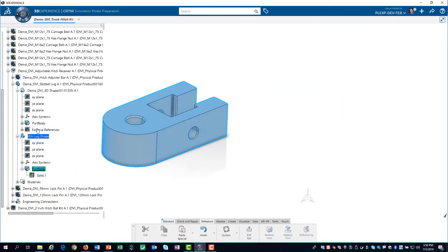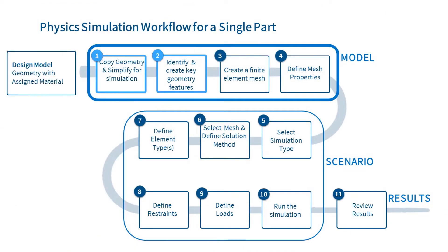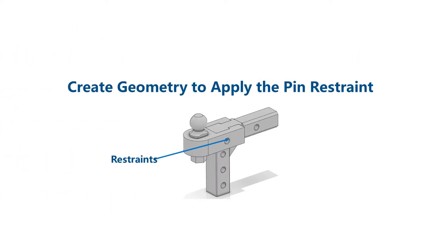We load the simulation model prep app and select 'Div Featuring' from the action bar. All of the features on the lug are critical, so we will not launch the app. However, it is important to know where this app is located. We are now ready for Step 2. The first thing we need to do is create some geometry to apply the X and Z restraints to the pinhole. Within the structural scenario definition, we could simply select the nodes that we want to restrain. However, we would need to reselect the nodes whenever the geometry or mesh changes.